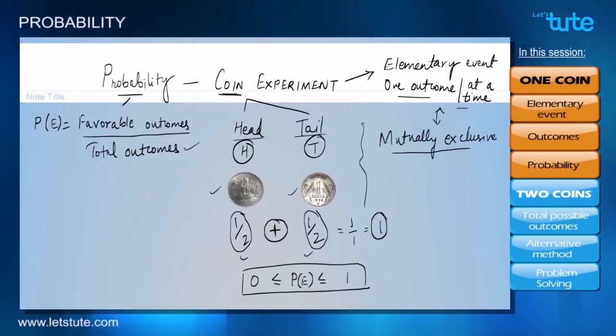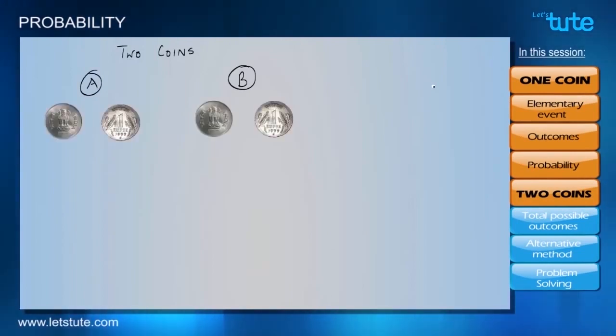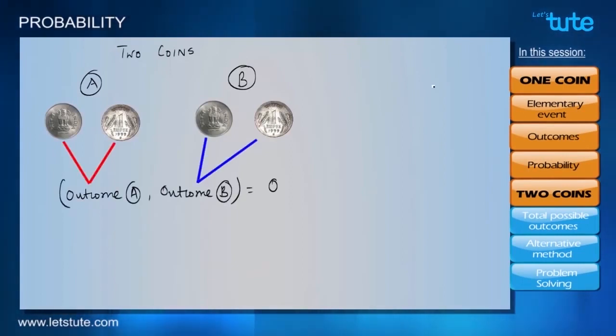How about making it more interesting and talking about probabilities associated with two coins. Let's name our coins as A and B. And each of them will have same outcomes heads and tails. Now, in order to know the possible outcomes from the event of tossing two coins, what we'll do is, we'll group outcome from coin A with the outcome from coin B.